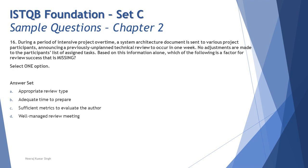The type of review here is a technical review for the system architecture. We have a dedicated participants list which is unchanged, and assigned tasks — who will be moderator, who will be reviewers, who all will be participating. Given this information, you need to identify what important parameter for review success is missing. You need to recall the success factors from the last segment of this chapter to pick the right answer from the given options.